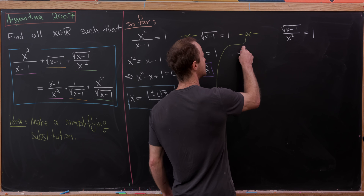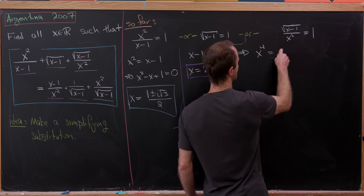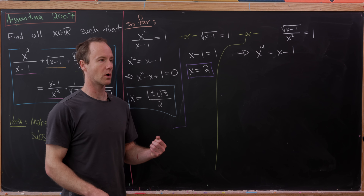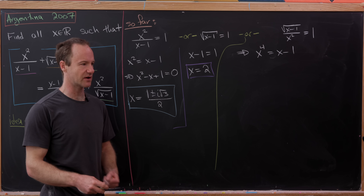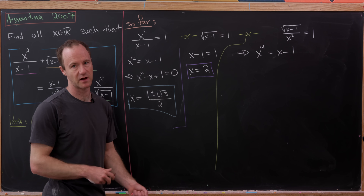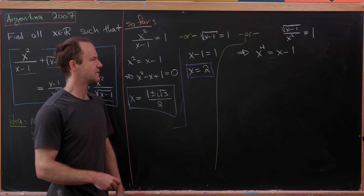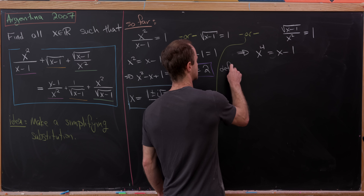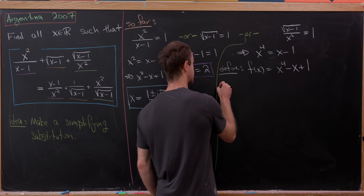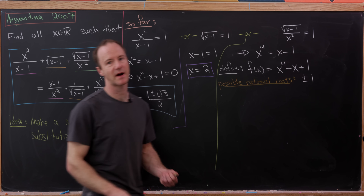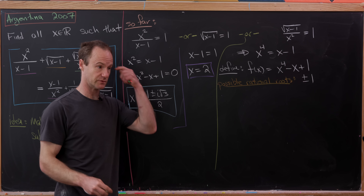At this stage we can factor the expression. This factorization may not seem obvious but it shows up enough to keep in mind: it factors as (X minus 1)(Y minus 1)(Z minus 1) equals zero. You can expand this to verify it matches the previous line. This means X equals 1, or Y equals 1, or Z equals 1. Now let's substitute back to solve for little x.